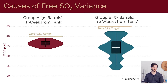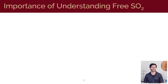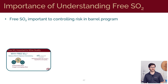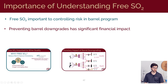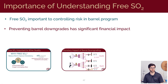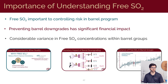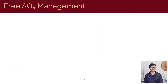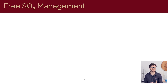So that's already a lot of information. So far we've looked at how free SO2 is important for managing risk in a barrel program and how this can affect barrel downgrades, which can have a significant financial impact. We also saw almost ubiquitous variation in free SO2 within barrel groups. Now I'd like to break down the different processes and look at how each step affects the winemaking team's ability to make decisions, and ultimately how it affects wine quality.